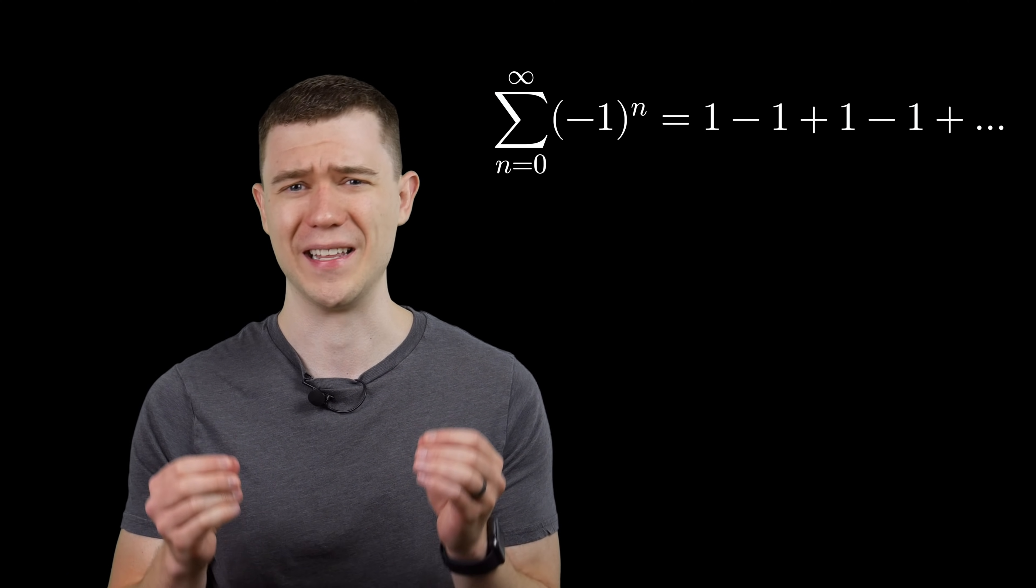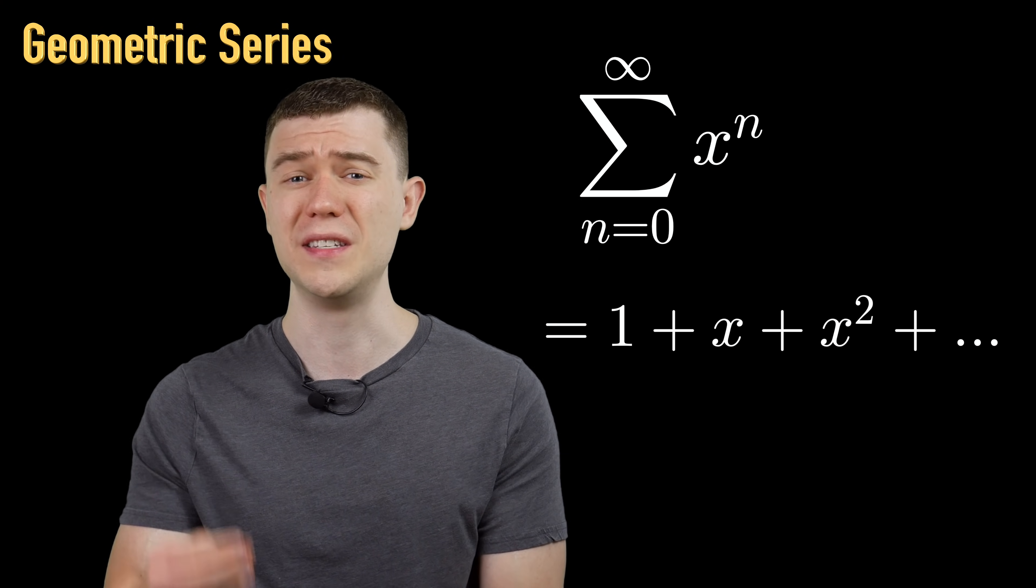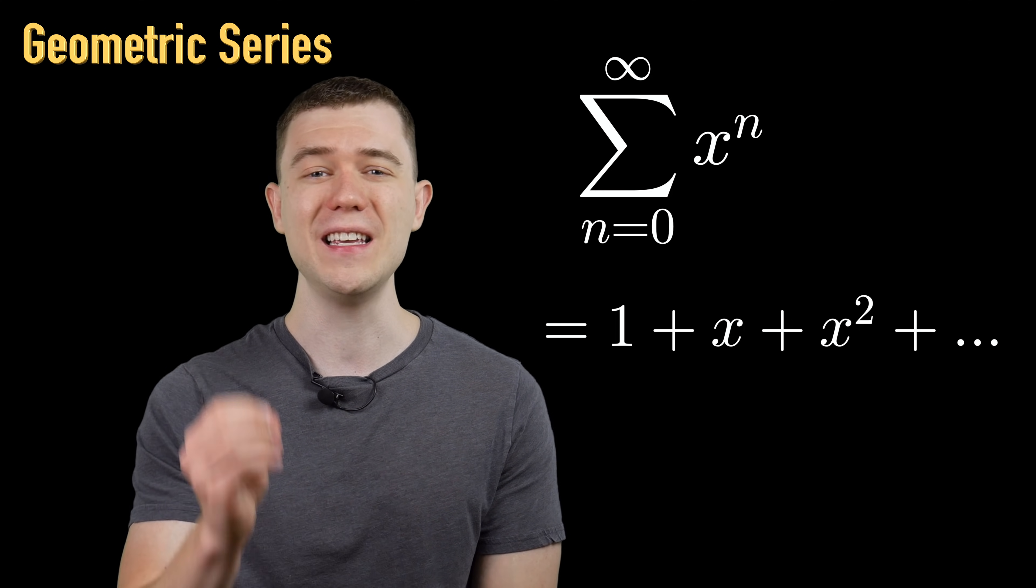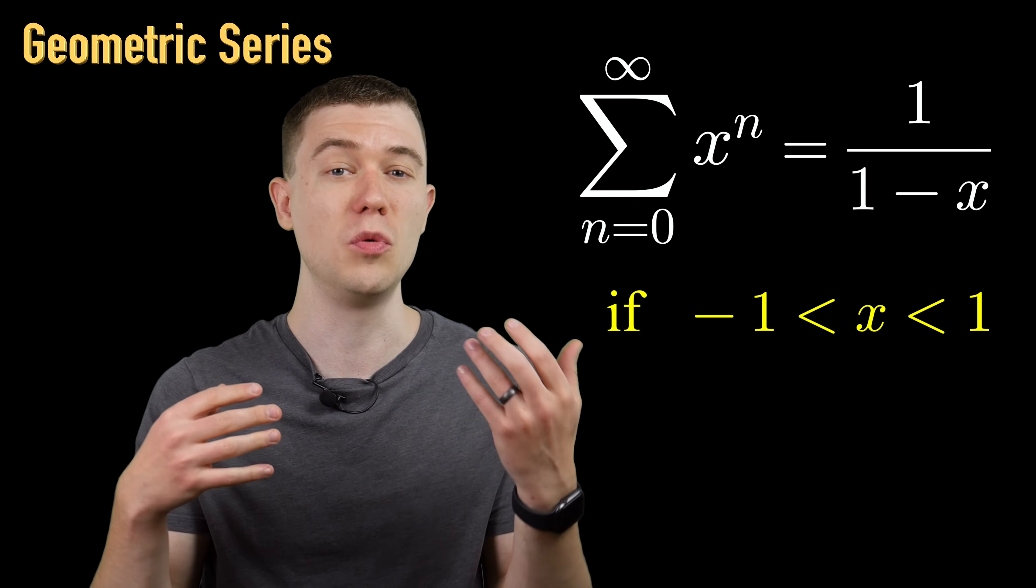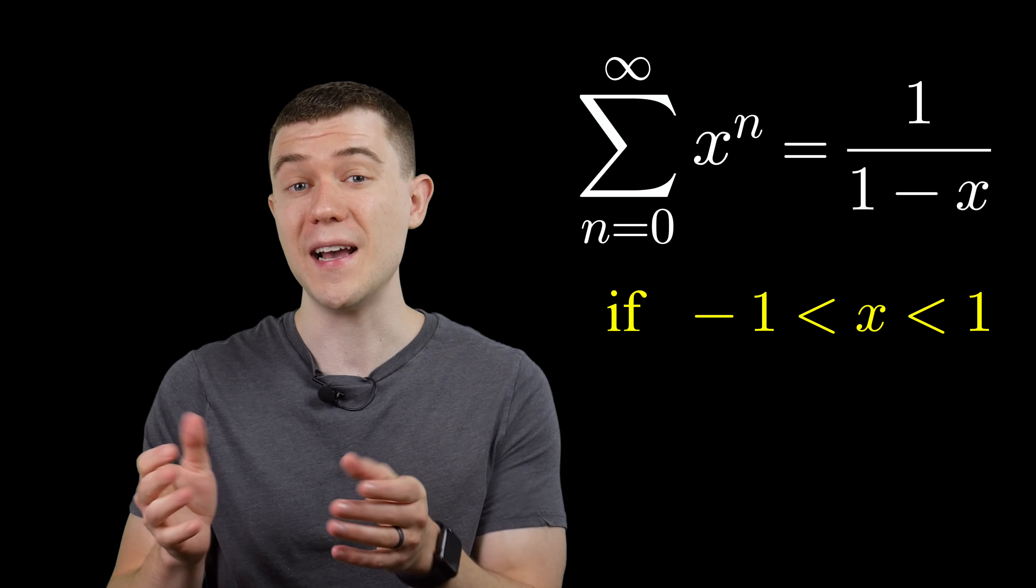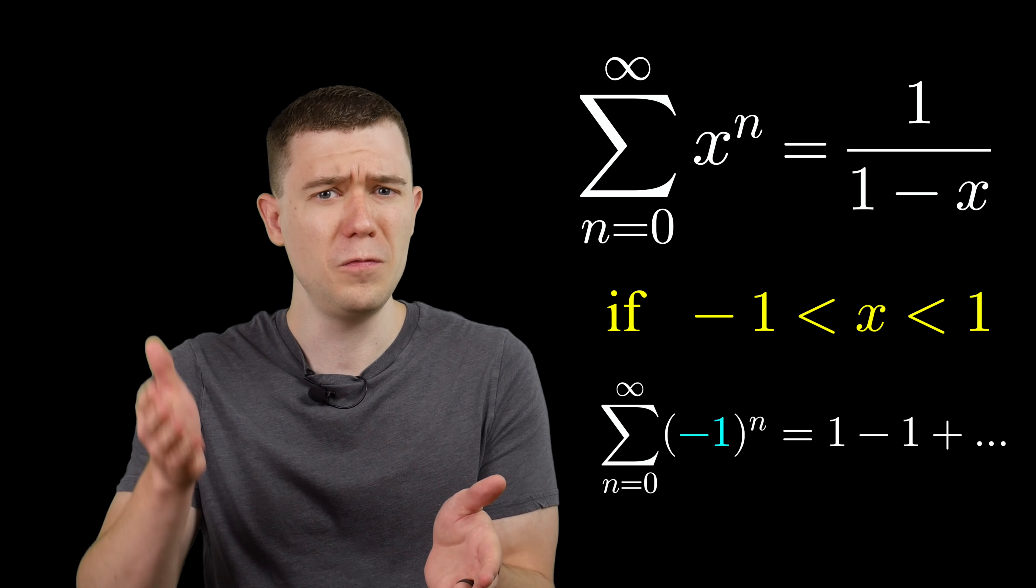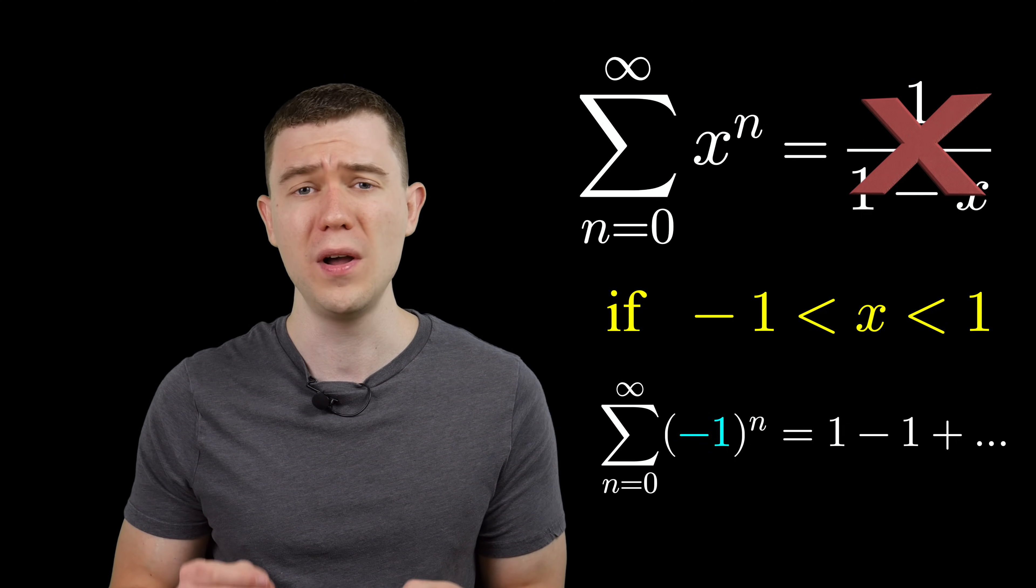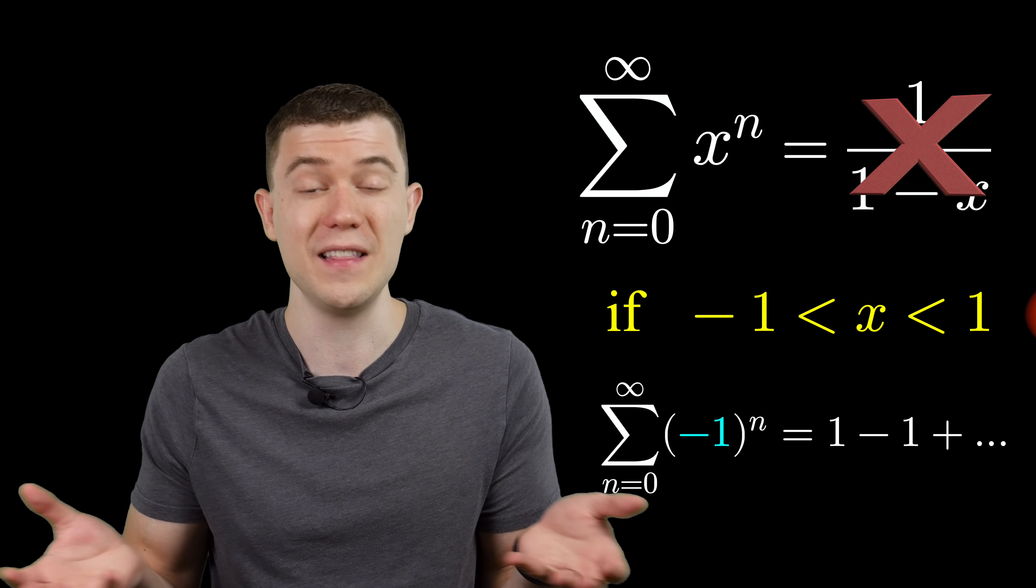Until I started to look at the geometric series. The good old geometric series x to the n summed from n equals zero to infinity, this equals one over one minus x, so long as x is between minus one and one, not including those endpoints. If we substituted x equals negative one, we get our Grandi series. But we can't substitute negative one into the formula one over one minus x. That's outside the interval of convergence.